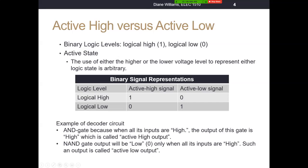In the same way, we could have a low voltage represent a high, or we could have a low voltage represent a low. Typically when we talk about an active high signal, the logical high is what activates the signal. So logical high is a one. In an active high state, the logic level high is a one, and the active low is a zero. But we can also have a state where we say the active high is a logic low, and the active low is a one.